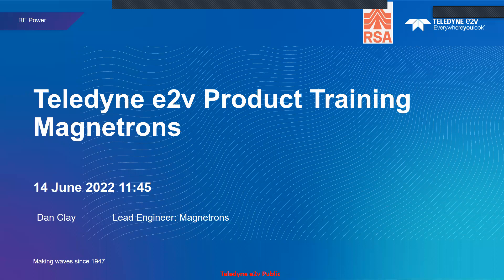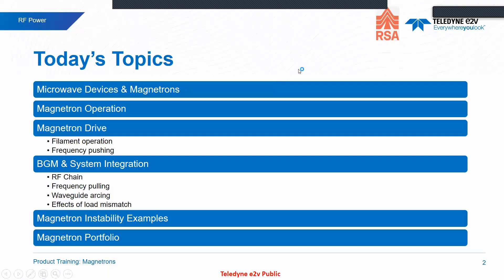The plan for today is to run through some of the basics of the product and how it operates. We'll touch a little bit on the driving of the magnetron and what's important about that, its interaction with the RF chain, and then finish on some examples of instability - where hopefully you'll be able to get a gist of where we're coming from when we use particular terminology.